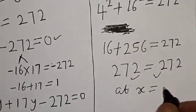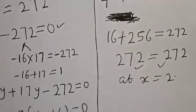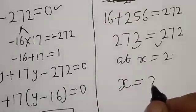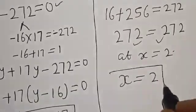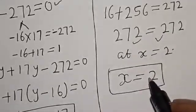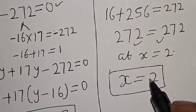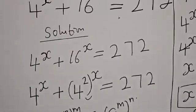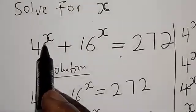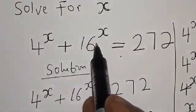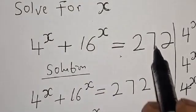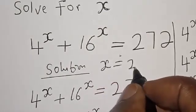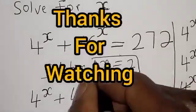Therefore our final answer is x equals 2. If you have enjoyed the class, please don't forget to like, share, comment and subscribe. So we have 4 raised to power x plus 16 raised to power x equals 272, and therefore x equals 2. Thank you.